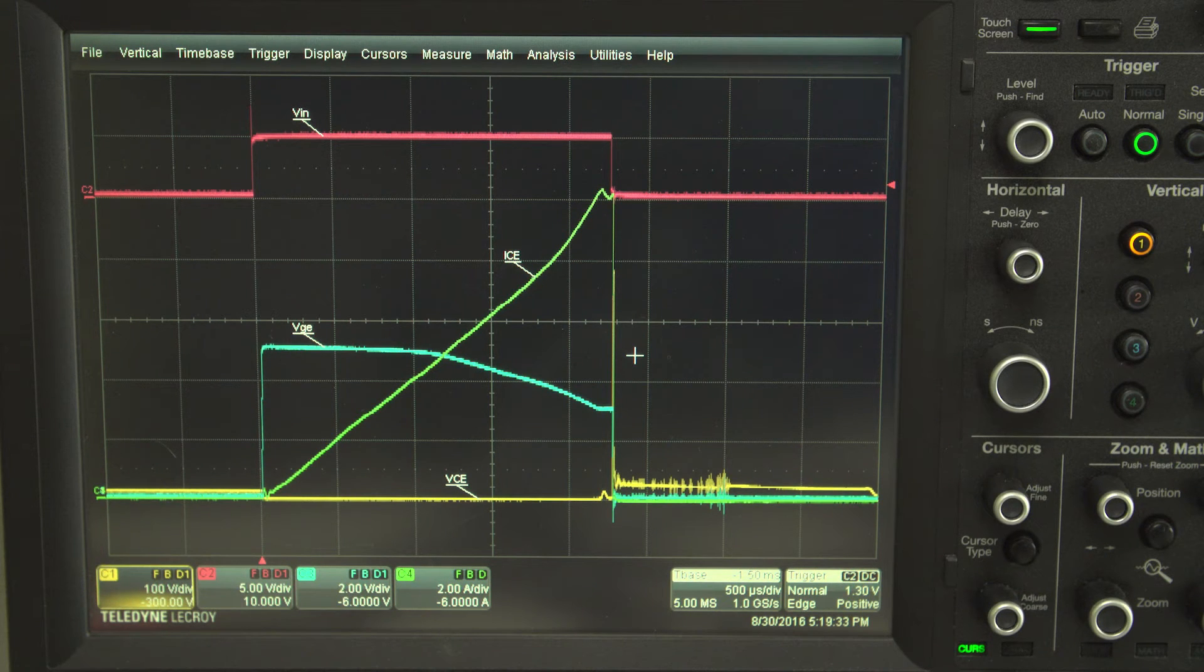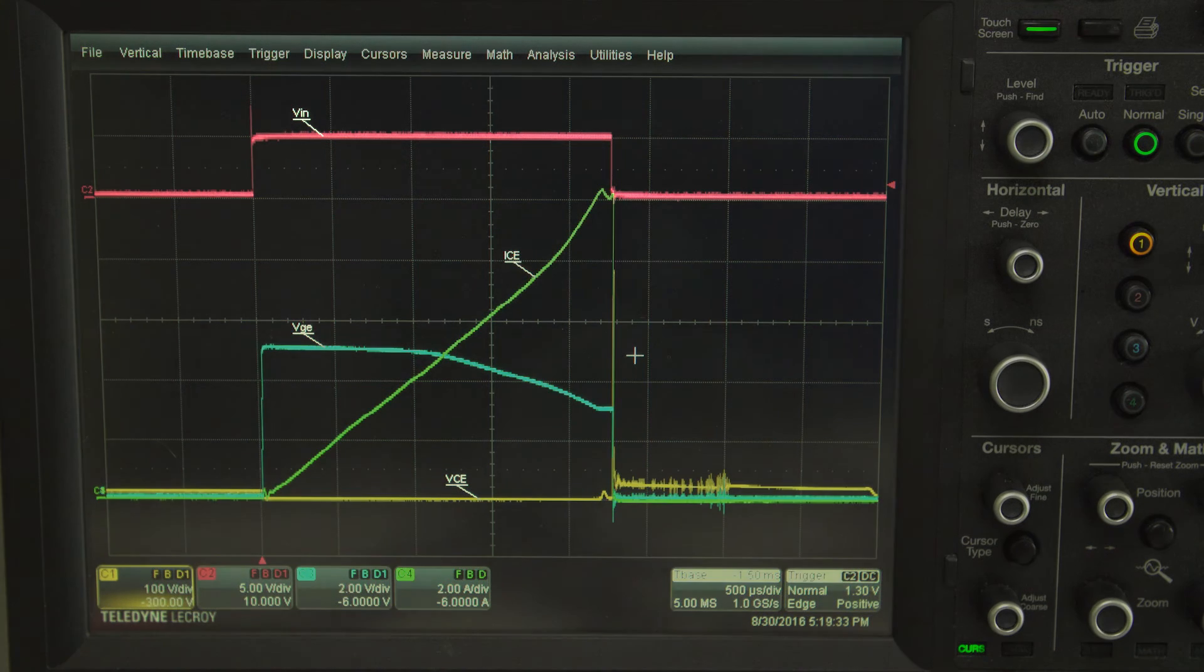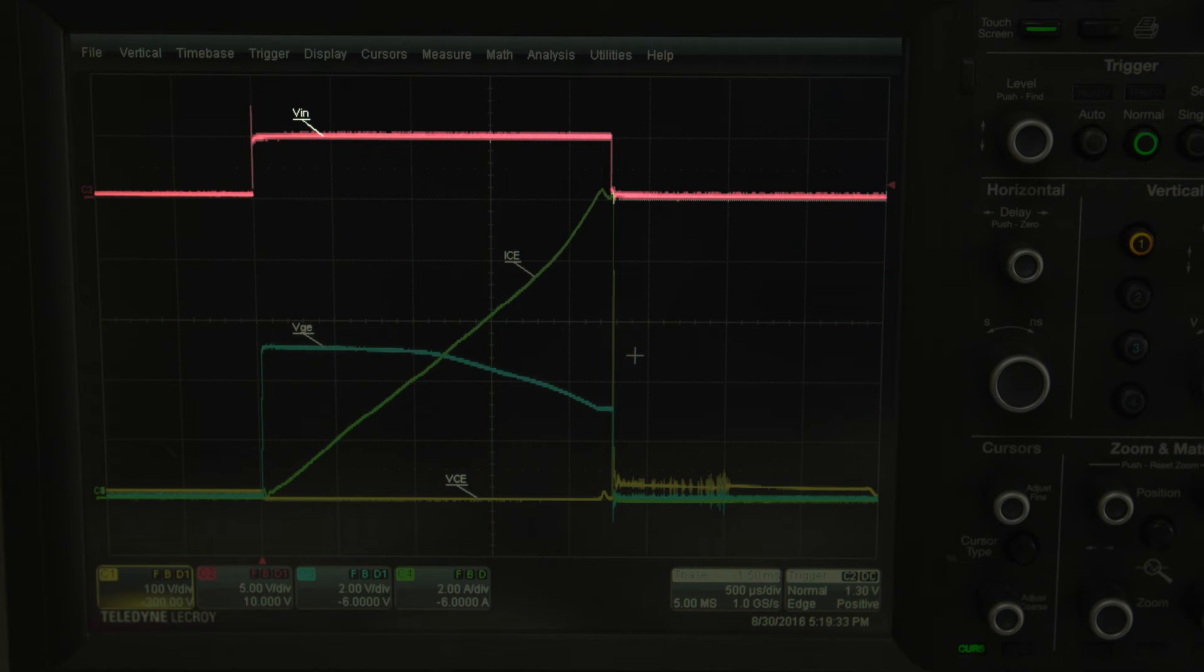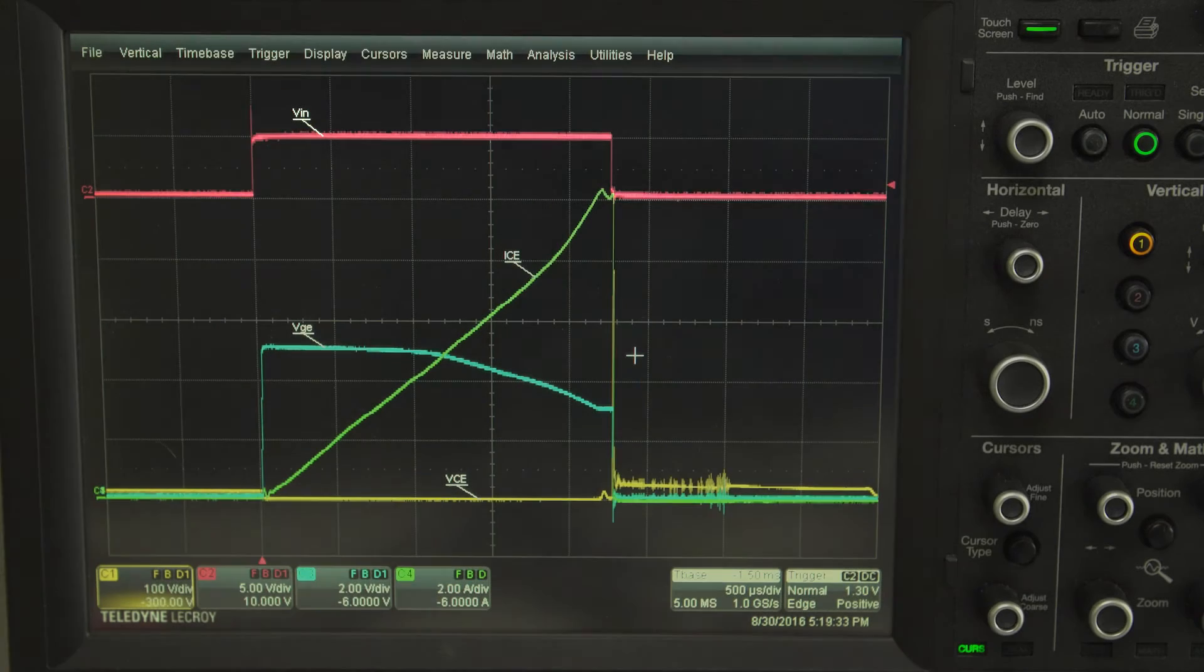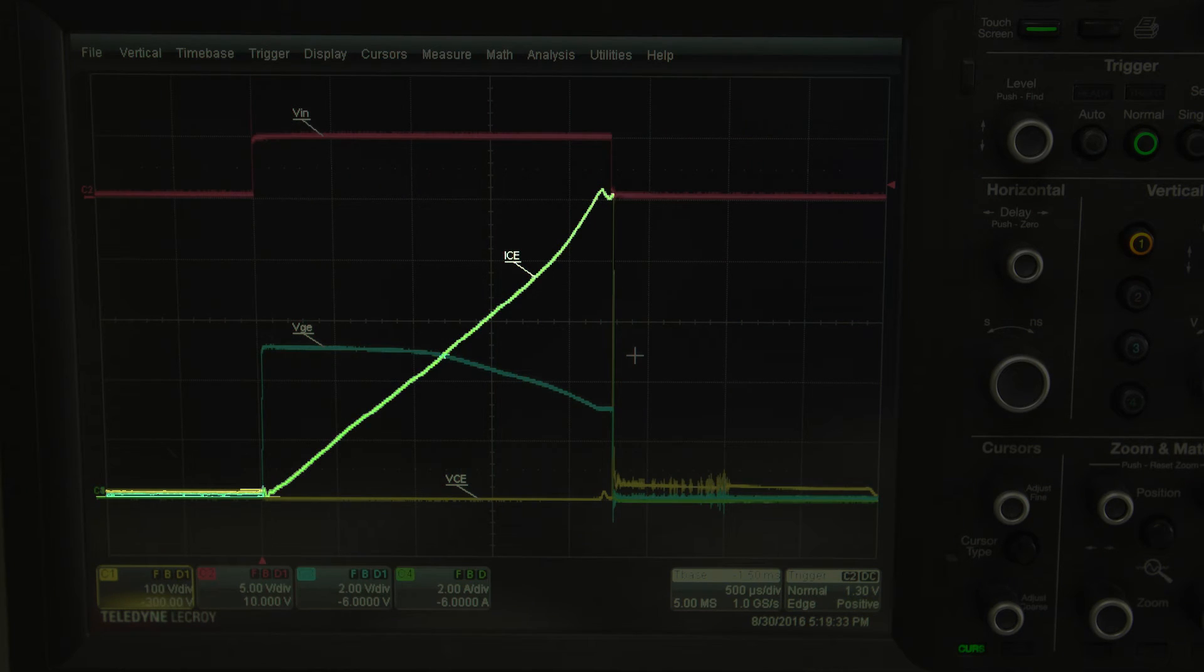When the system is operating properly, you will see the input high signal received by the driver IC that activates the ignition IGBT. The IGBT turns on and begins charging the coil primary as evidenced by the rising coil current. Once the input low signal is received by the IC, the IGBT is turned off. The large dI/dt produced by the fast turnoff of the primary coil will induce a large increase in voltage across the primary and secondary coil. The high voltage generated on the secondary coil will cause a spark across the spark plug gap.